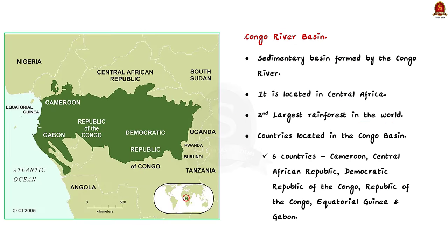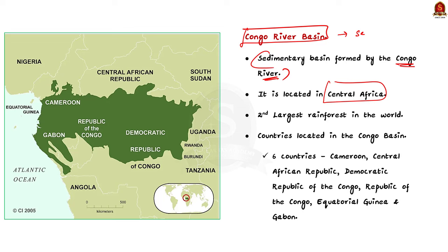The Congo River Basin is a sedimentary basin formed by the Congo River, located in Central Africa, primarily characterized by the Congo Rainforest — the second largest rainforest in the world. The Congo River Basin is situated among six countries: Cameroon, Central African Republic, Democratic Republic of Congo, Equatorial Guinea and Gabon. The Congo Basin Climate Commission was established in 2016 under the leadership of the African Union to balance economic transformation with sustainable development.